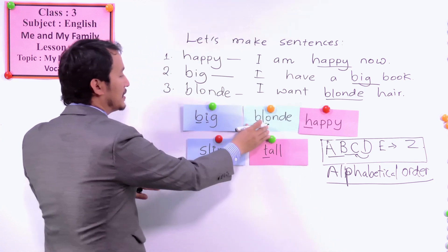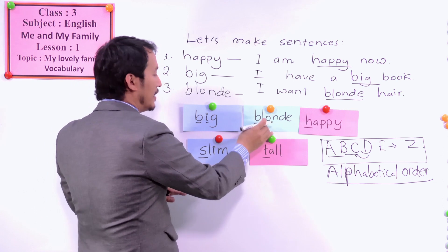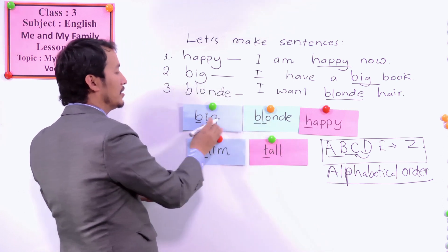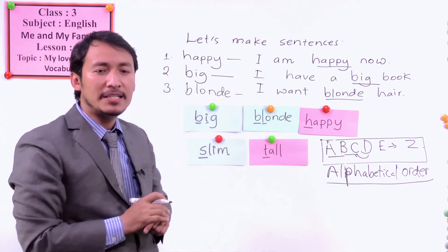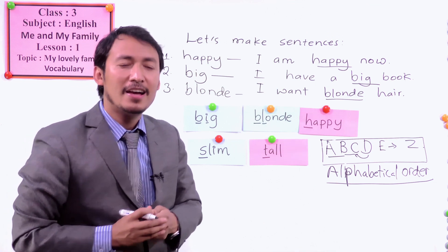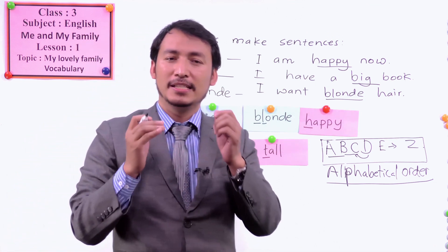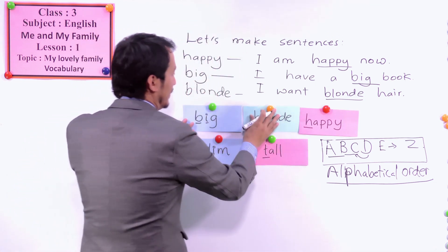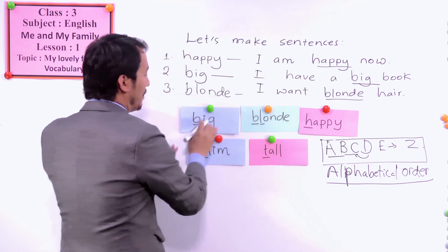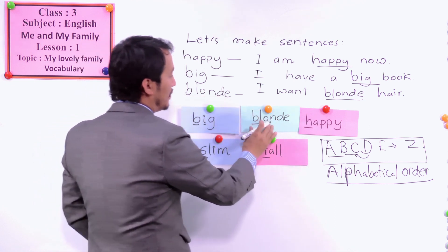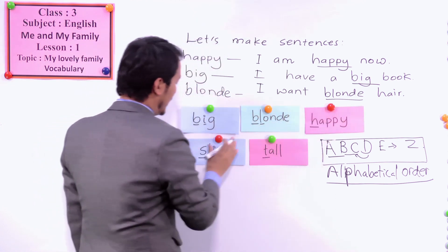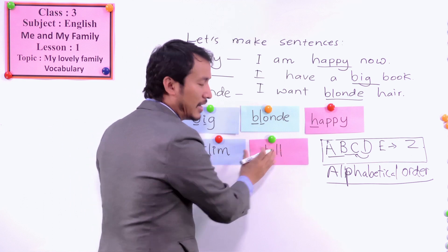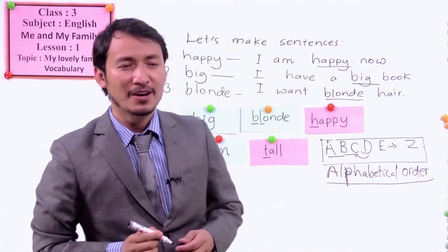So we put L after I. The correct alphabetical order of these words is: big, blonde, happy, slim, and tall. This is how we order them.